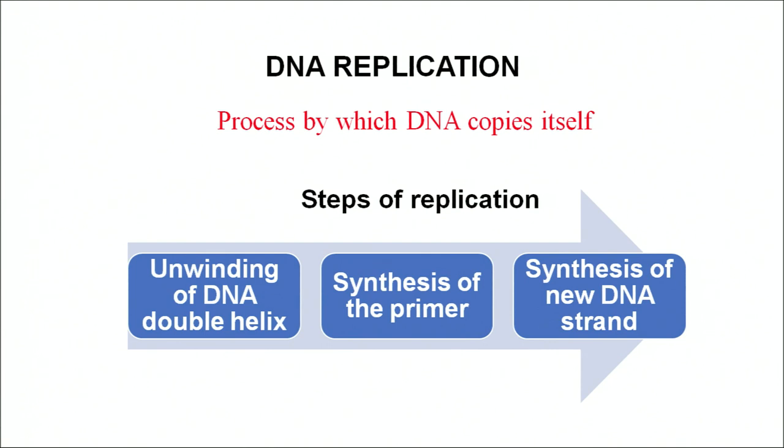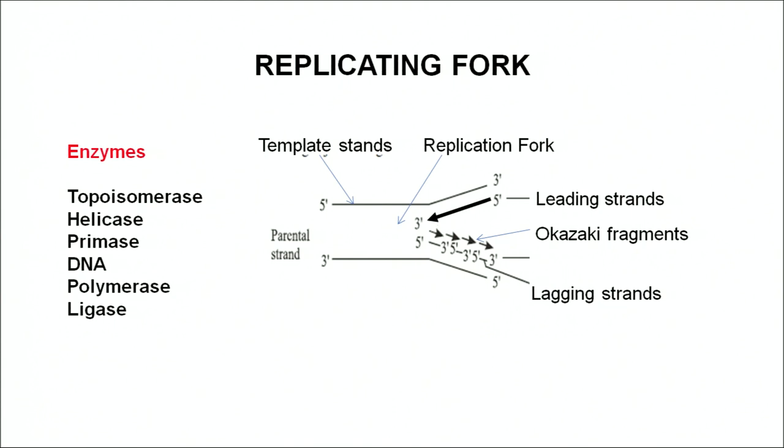One strand of DNA which serves as a template is the old one, and the one strand of DNA that is newly synthesized is the new one. So we say that DNA replication is semi-conservative in nature. The first step — unwinding of the DNA double helix — takes place with the help of enzymes topoisomerase and helicase, which bind at the replication fork.